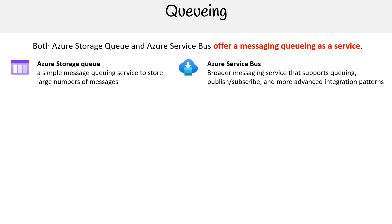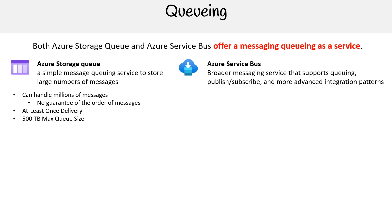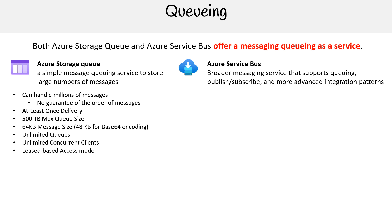On the storage queue side, it can handle millions of messages. There's no guarantee of the order of messages, but there's at-least-once delivery. The max queue size is 500 terabytes, with a 64 kilobyte message size — or 48 kilobytes if you're doing Base64 encoding. It supports unlimited queues and unlimited concurrent clients, with a lease-based access mode set from 30 seconds to 7 days for the entire queue.